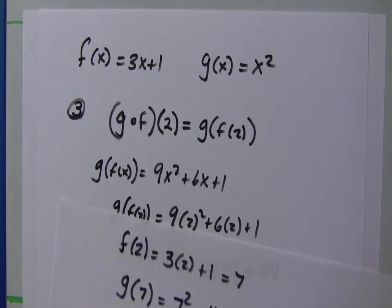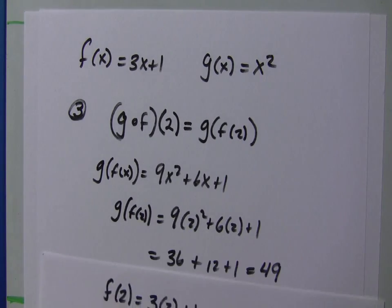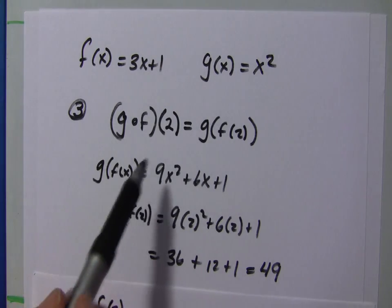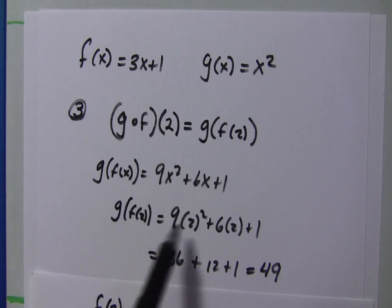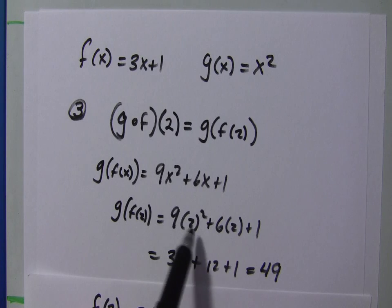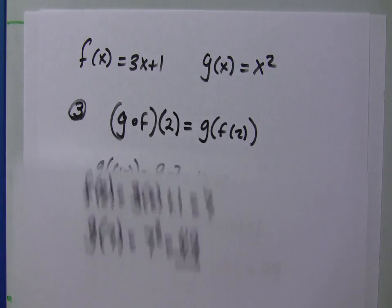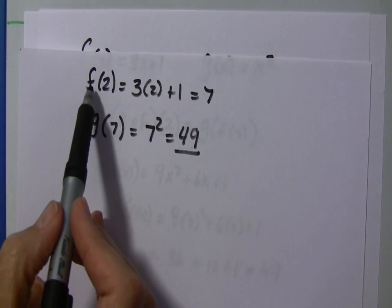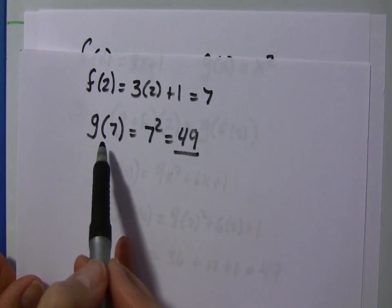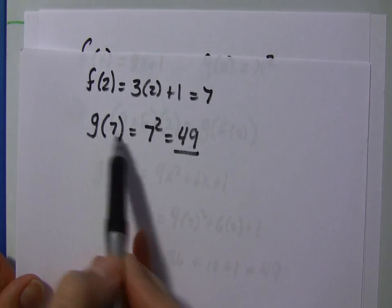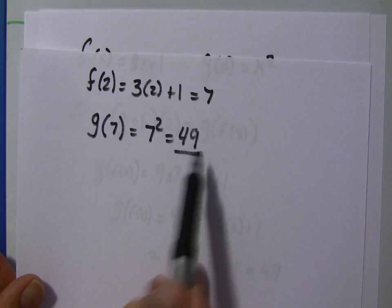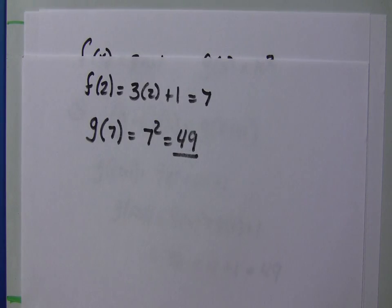So, two ways to do the same kind of problem here. You can see the first way was g of f of 2. We found what g of f of x was and we plugged in 2. Or, you can break it apart by saying f of 2 is this, and then the g of that, which is the f of 2, is 49. I hope this helps. Thanks for watching.